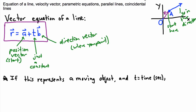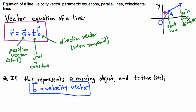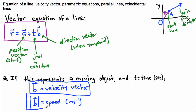Now, if this represents a moving object and t represents time, then we can say that b is called something else — it has a special name. It's called a velocity vector, so it tells you in which direction your velocity is. You can go even further: if you want to know the actual length of your velocity vector — this value right here — that's the magnitude of it, and it's actually called your speed, measured in meters per second.